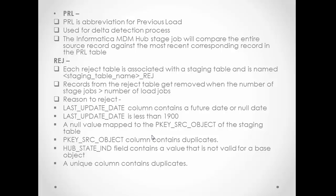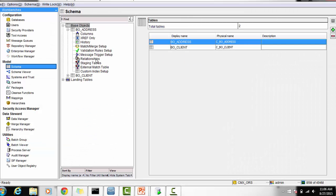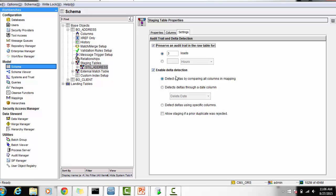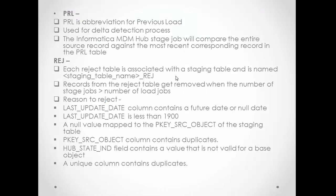PRL is the abbreviation for Previous Landing table, which is used for the delta detection process. If you enable delta detection in the stage table configuration, the PRL table will be populated. The Informatica MDM Hub stage job compares the entire source record against the most recent corresponding record in the PRL table. Even if your history table contains a more recent record, records are always compared with the PRL table, not the history table.